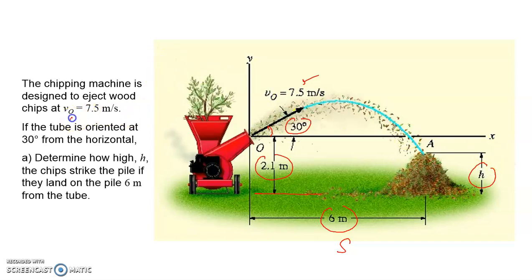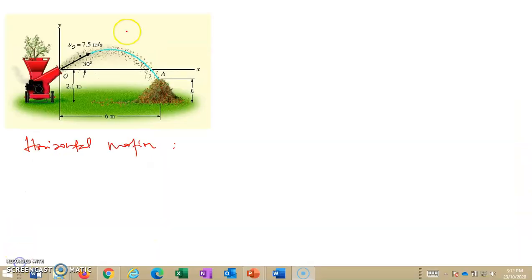Given: velocity, initial velocity is 7.5 meters per second, and the orientation of the outlet tube of the machine is 30 degrees.